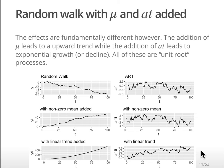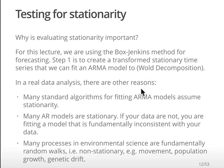I point this out because when you use the test for stationarity, they're going to talk about these different types. In practice, you're going to be using the forecast package in the lab - it's going to take care of the subtleties. Now, why do we need to test for stationarity? For this lecture, using the Box-Jenkins methods for forecasting, step one is creating a transformed stationary time series to fit an ARMA model to. We need to do enough differencing until our time series is stationary.